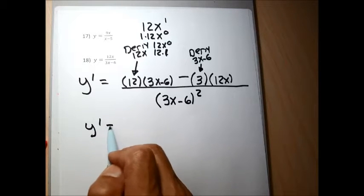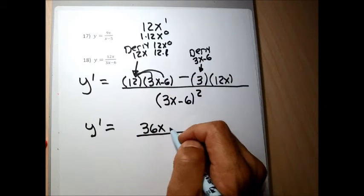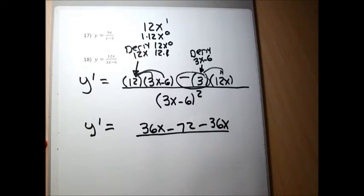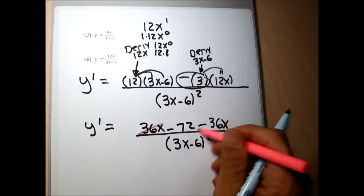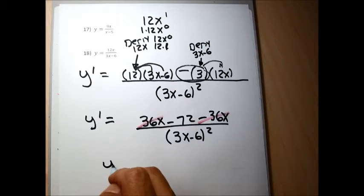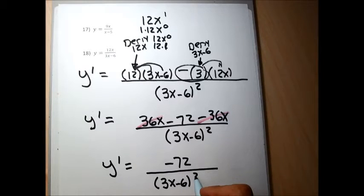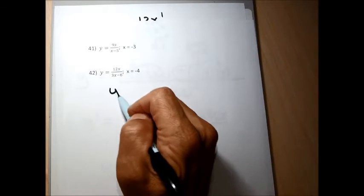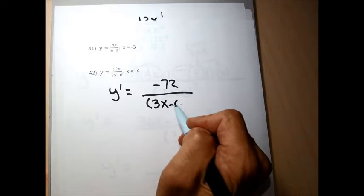Now I clear the parentheses and combine like terms. 12 times 3x gives 36x; 12 times minus 6 gives minus 72; then minus 3 times 12x gives minus 36x. The 36x terms cancel, leaving minus 72 in the numerator. The denominator stays as (3x minus 6) squared. So the derivative is minus 72 over (3x minus 6) squared. I'll need this answer for problem 42.